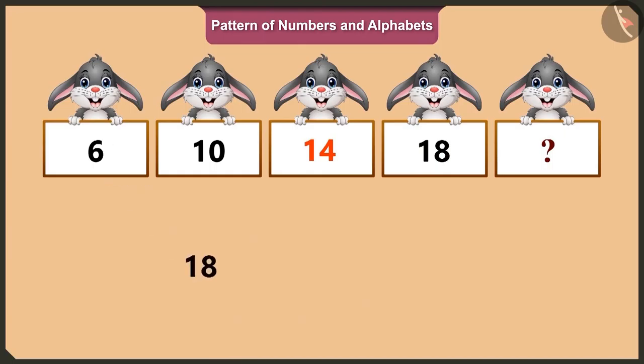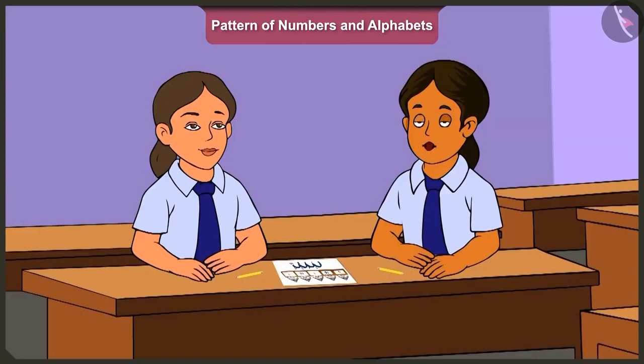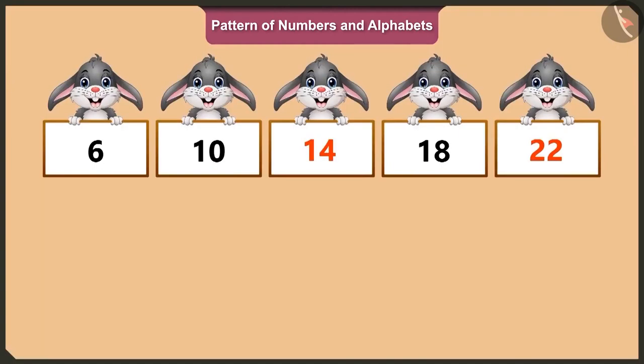After eighteen, nineteen, twenty, twenty-one, twenty-two. That means we get twenty-two on adding four to eighteen. Very good, Vinny.